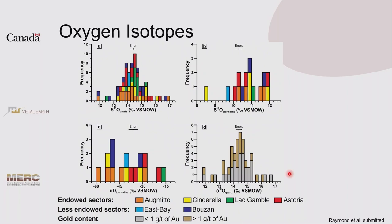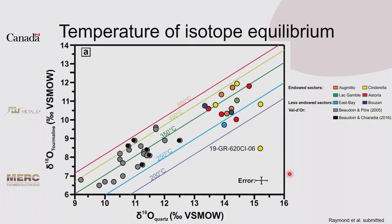This is a recurring theme — fluids are flowing but something is causing mineralization. To use this data to understand fluid composition and source, we need to know the formation temperature to calculate the water composition. The samples plot along isotherms with a fairly wide temperature range from 250 to 450 degrees, but plotting along isotherms shows they are mostly in isotopic equilibrium. This is similar to what we find in the Val d'Or area with the same range in composition and isotopic equilibrium.